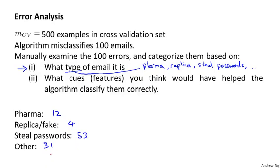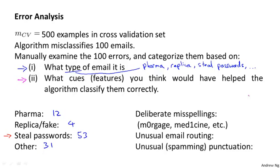By counting up the number of emails in these different categories, you might discover that the algorithm is doing particularly poorly on emails trying to steal passwords. That might suggest it might be worth your effort to look more carefully at that type of email and see if you can come up with better features to categorize them correctly. I might also look at what additional features might have helped the algorithm classify the emails — for example, detecting deliberate misspellings, unusual email routing, or unusual spammy punctuation such as lots of exclamation marks.